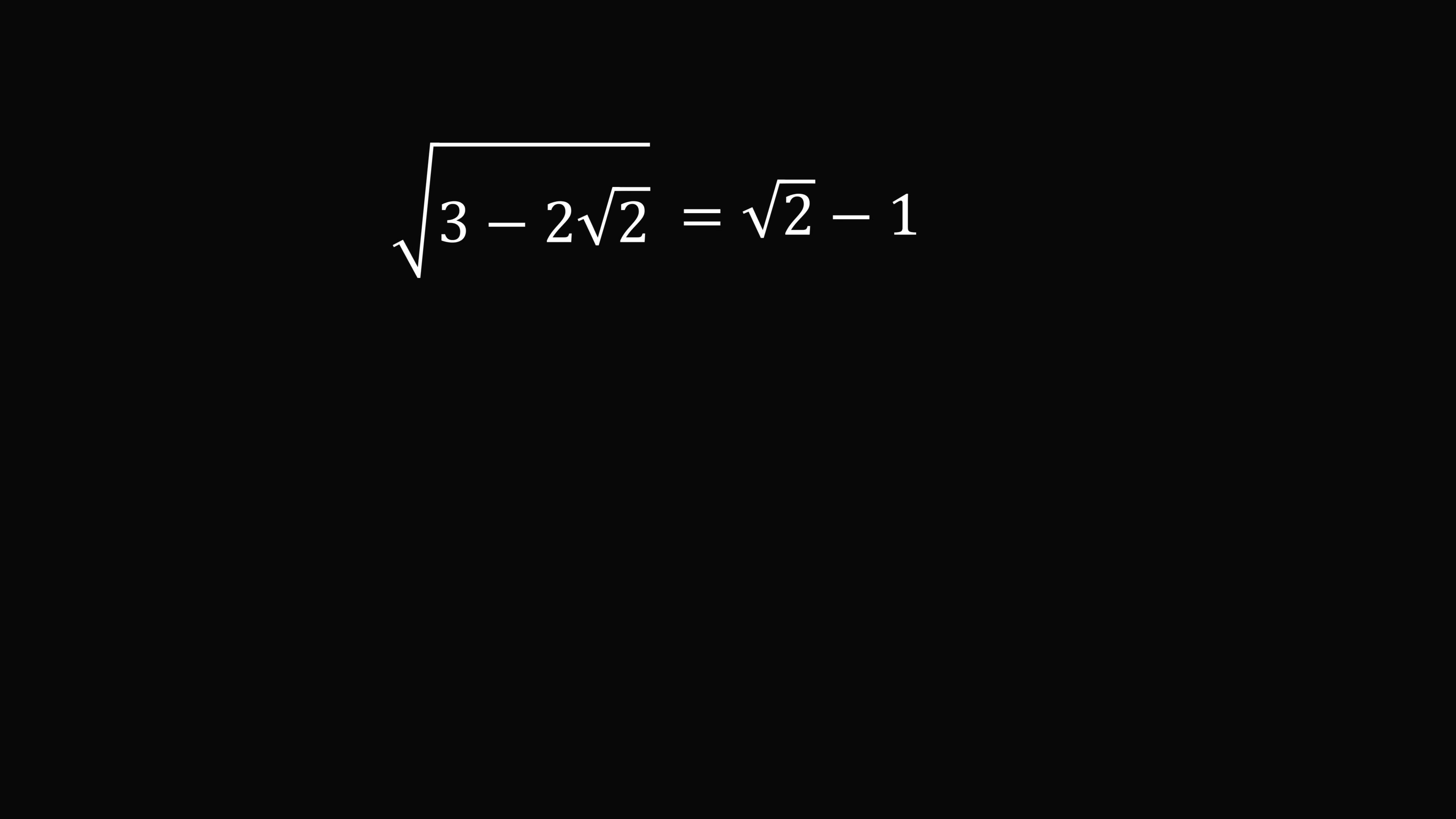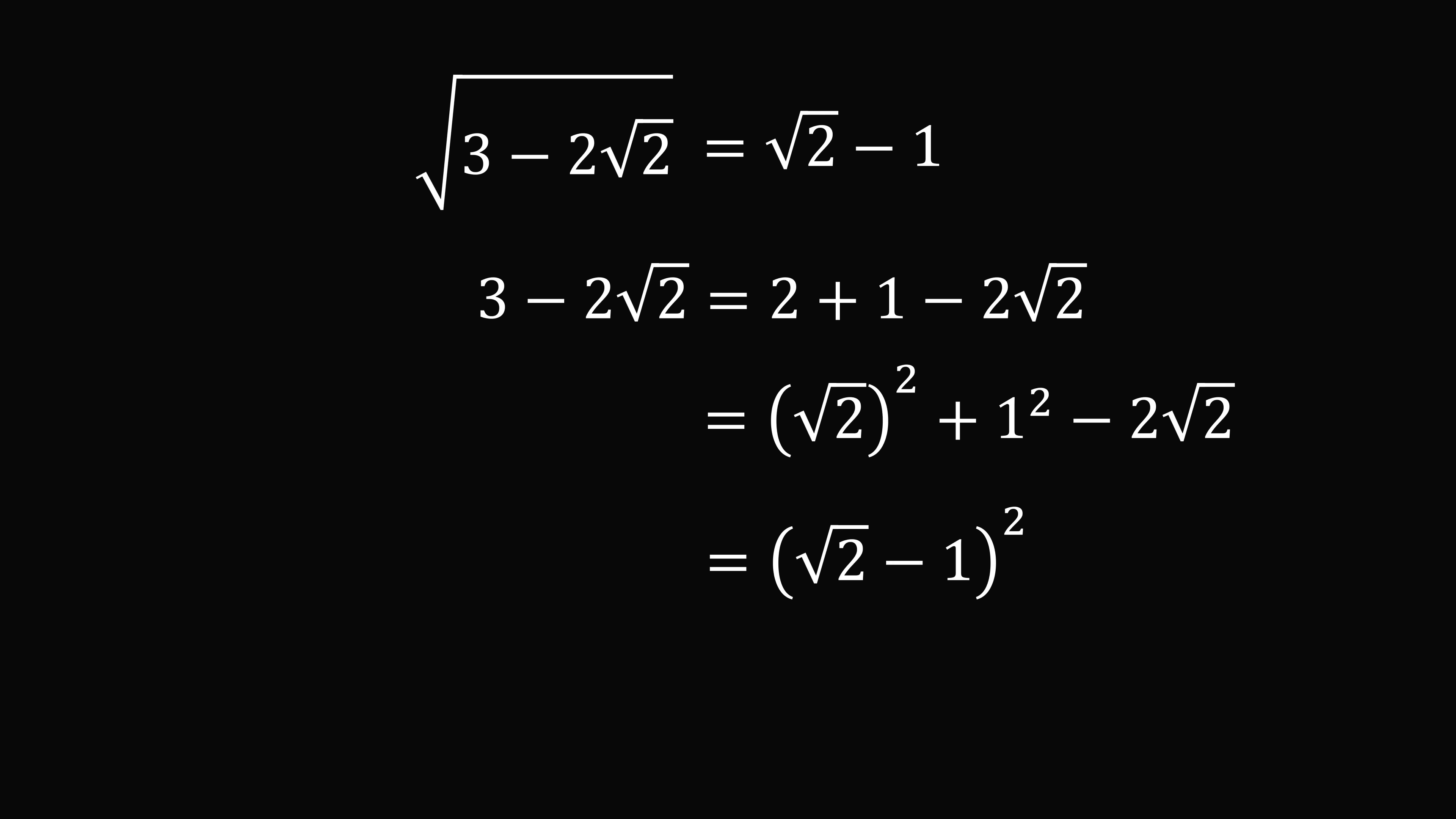Now that we know the answer, we could actually have seen a very quick way to solve this problem. We could have written 3 as 2 plus 1. Then 2 is equal to the square of root 2. So we have the square of root 2 plus the square of 1 minus 2 root 2. This can be factored into a perfect square of the square of root 2 minus 1. Taking the square root and the principal square root of both sides, we would get that the square root of 3 minus 2 root 2 is equal to root 2 minus 1. So that's a good way we could have solved it.